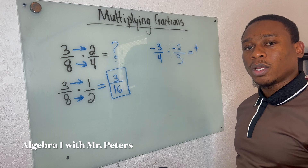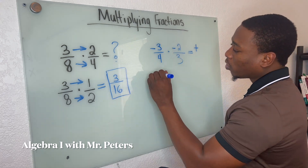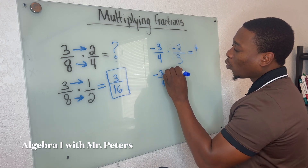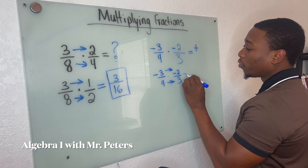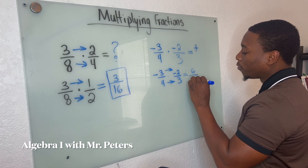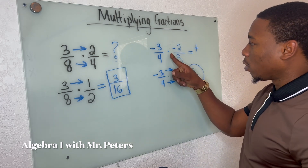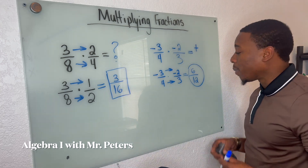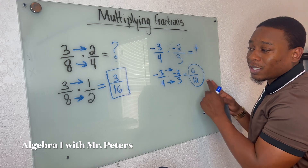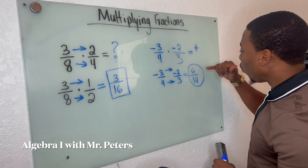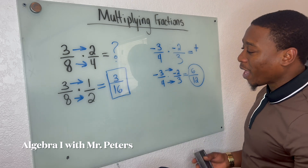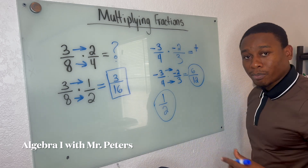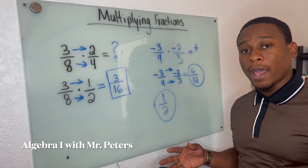Step two tells us we're now going to multiply. We're going to multiply straight across, and when we do, we're going to get the answer of positive 6 over 12. So step one, we checked — we could not simplify any of those fractions. Step two, we multiplied, and now we got our answer. Step three is to check if we could simplify. When we look at 6 over 12, that is the same thing as 1 half. If we divide the top and bottom by 6, we are going to get 1 half as an answer.